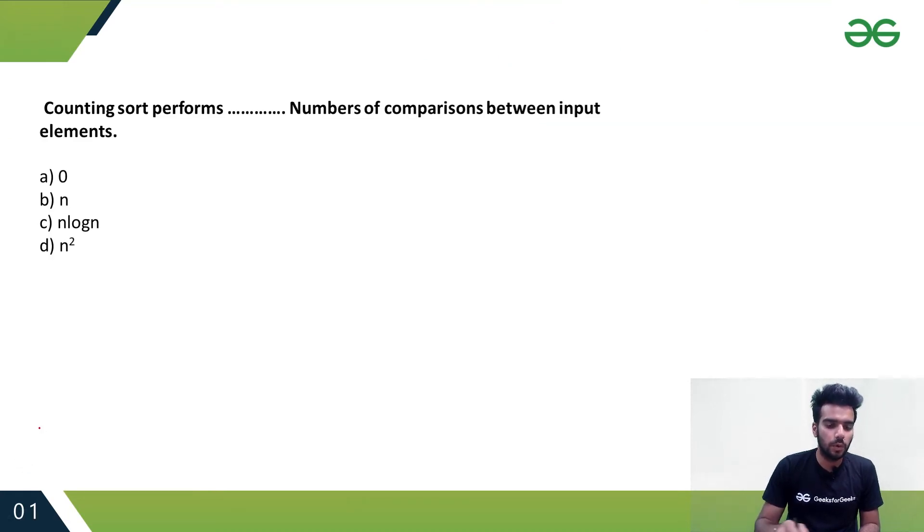Now let's see one more question: Counting Sort performs how many comparisons between input elements? If you recall, Counting Sort is a non-comparison based sorting algorithm, and non-comparison means zero comparisons. So the answer is zero, option A.